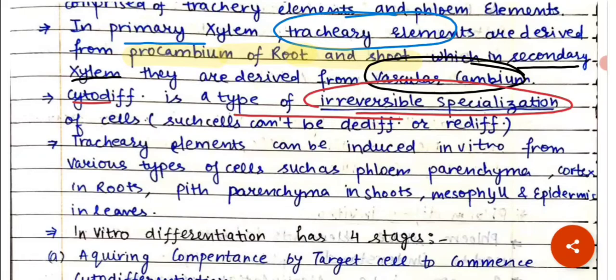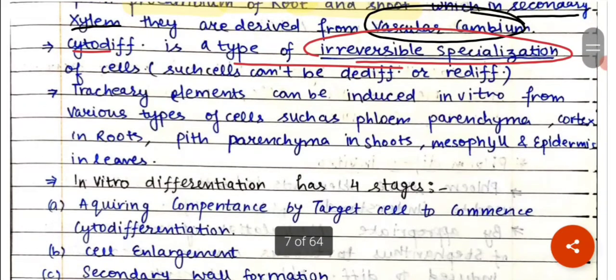Tracheid elements can be induced in vitro from various types of cells such as the phloem parenchyma, cortex in roots, pith parenchyma in the shoots, mesophyll and epidermis in the leaves.